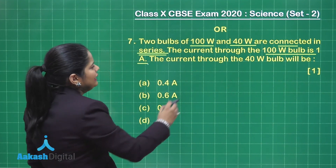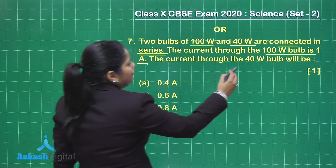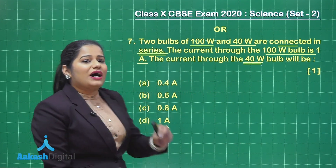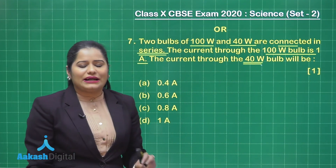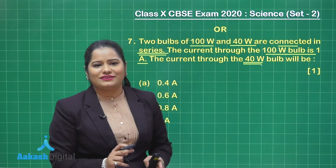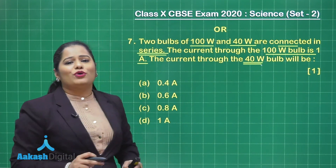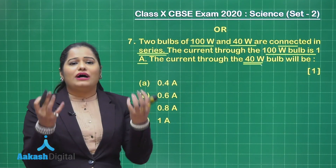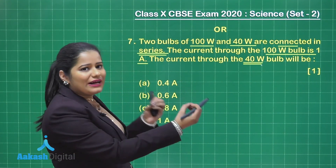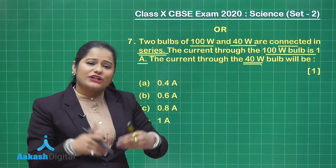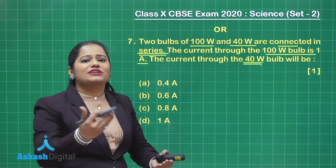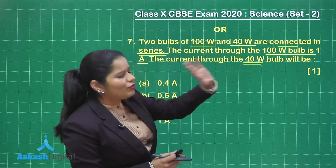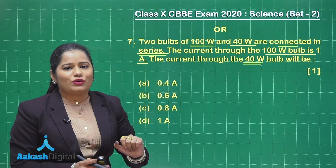The current through the 40 watt bulb will be — you need to keep in mind here that in series combination, the same current flows through resistors and bulbs. So whenever you are combining two electrical appliances in series, the same current is going to flow through both of them. So if 1 ampere of current is flowing through the 100 watt bulb, the same will flow through the 40 watt bulb.